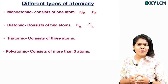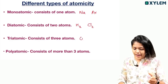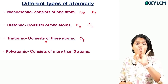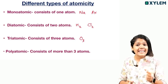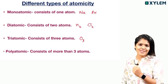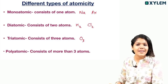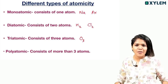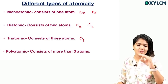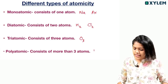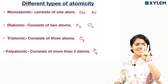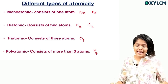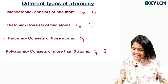Triatomic means it consists of three atoms. For example, ozone O3 — it consists of three atoms, therefore we say it is a triatomic molecule. Polyatomic means more than three atoms. For example, phosphorus is P4 — four atoms, it is polyatomic. And sulfur is S8 — that is also polyatomic.